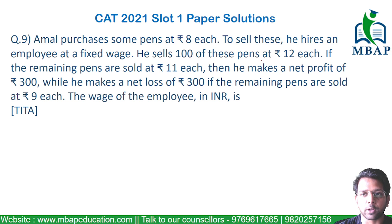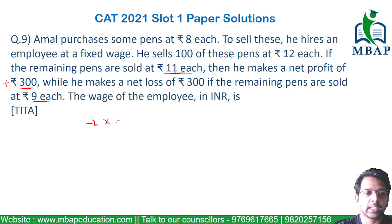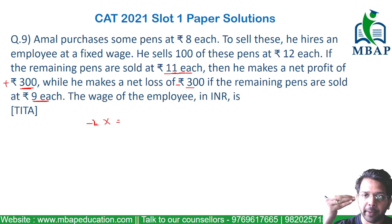Now, the important highlights to mark here: when you are selling the pens for Rs.11 each, you are getting Rs.300 profit. When you are selling them for Rs.9 each, which is a loss of Rs.2 per pen for X number of pens, you are making a loss of Rs.300. So from plus 300, you are coming to minus 300, meaning your overall value is actually reducing by Rs.600.